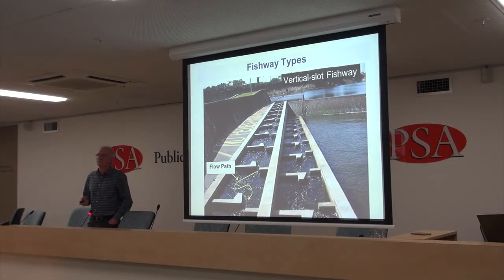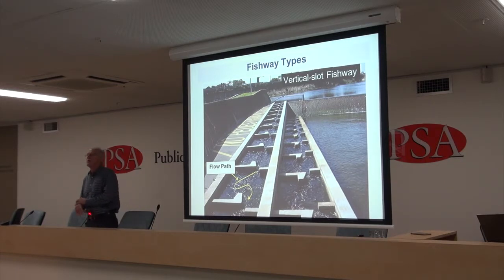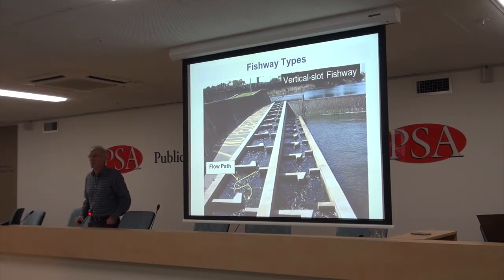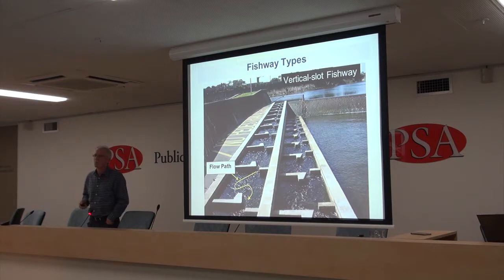Here's a vertical slot fishway. The water flows through a series of pools — pool-type fishways have been around for about 100 years. This design is very widely used because water flows through a vertical slot between each pool and dissipates turbulence very well. It also adjusts to variable water levels, which is important given Australia's variable hydrology. John mentioned George Iker — he came here, recommended this design, and it's been widely applied since.